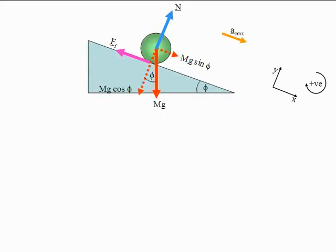You may want to go back and review the section entitled 'What part does friction play in rolling?' Carrying on with the problem, we need to look at the equations of motion, and we have, first of all, to consider the translational equations of motion.